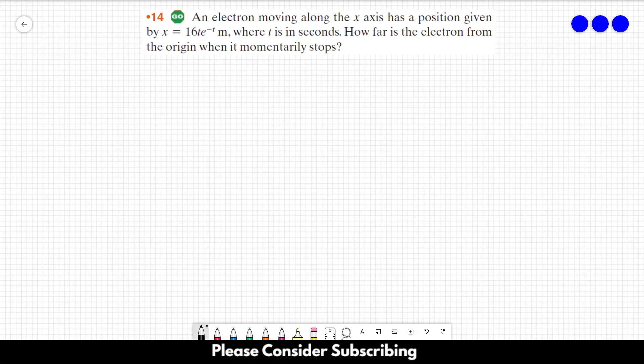Number 14. An electron moving along the x-axis has a position given by x equals 16 times t times e to the power of minus t, in meters, where t is in seconds. How far is the electron from the origin when it momentarily stops?